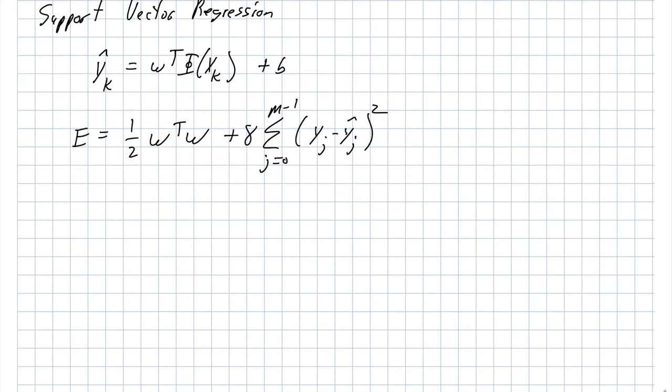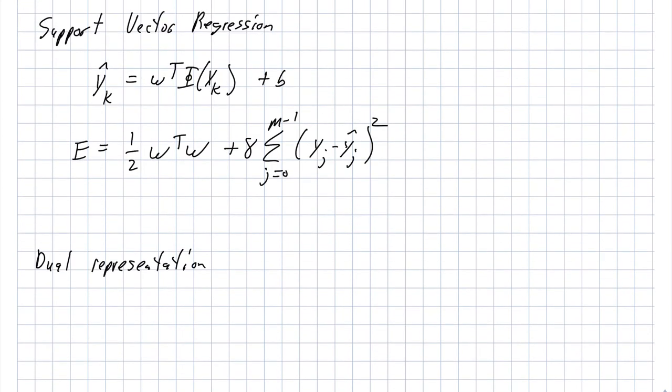So one can introduce what they call a set of Lagrangian multipliers. Again, we're not going to work through those details here, but we can represent this function in a dual space. And that looks like this. So yk is sum over the entire training set, and there's an alpha j here. And then our set of inner products, so phi of xj transpose phi of xk. And of course, there's a plus b here.